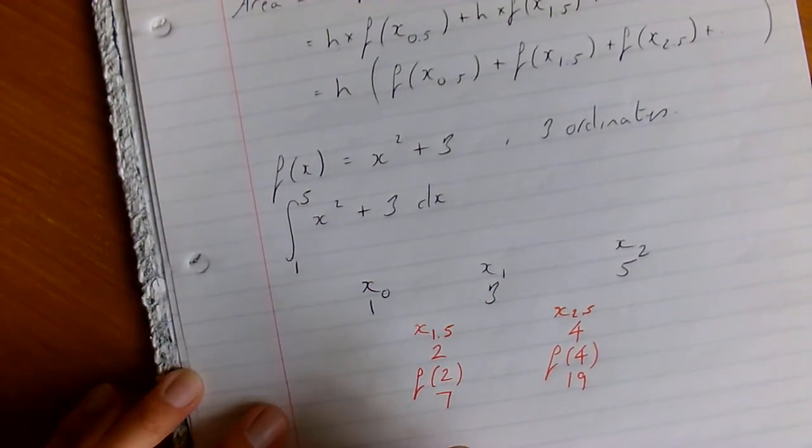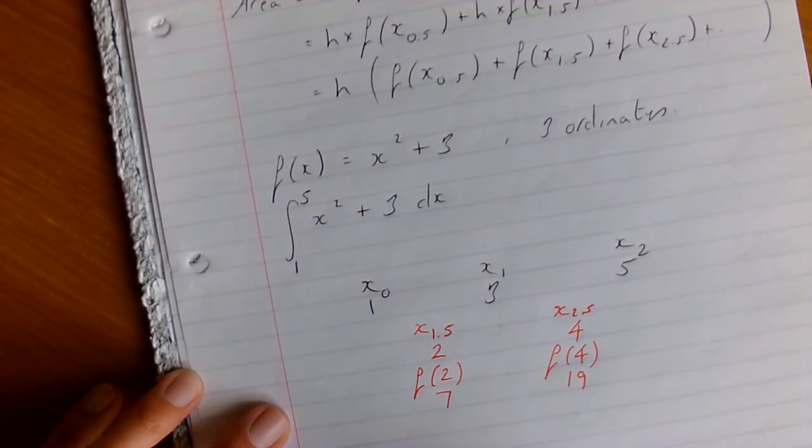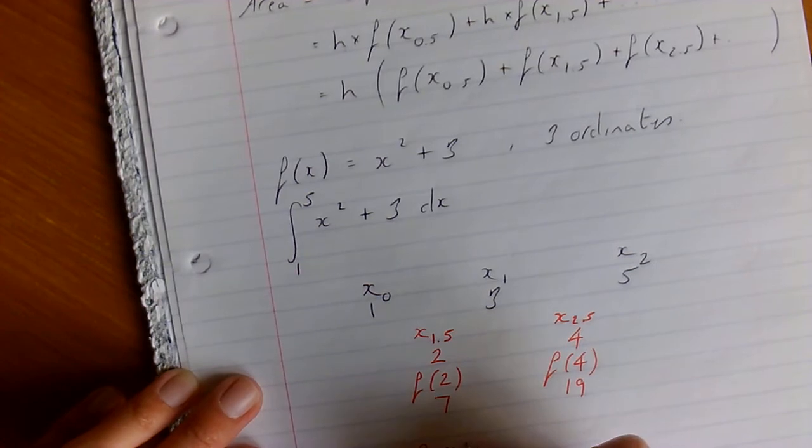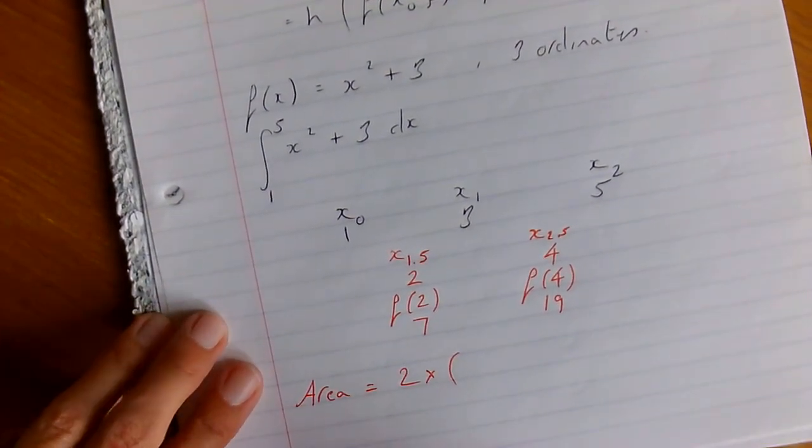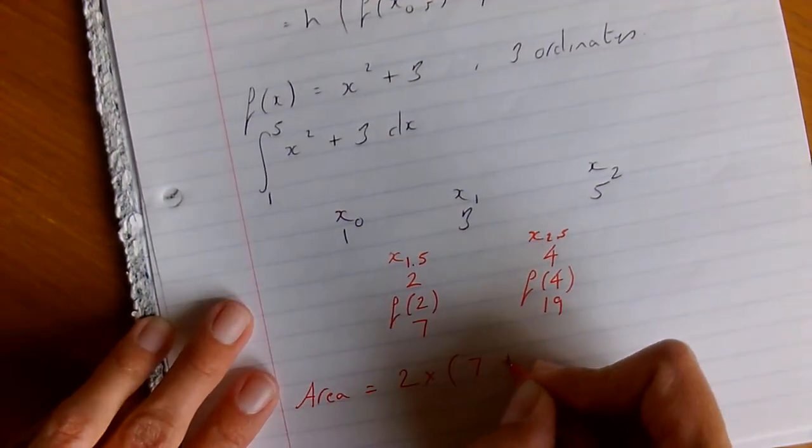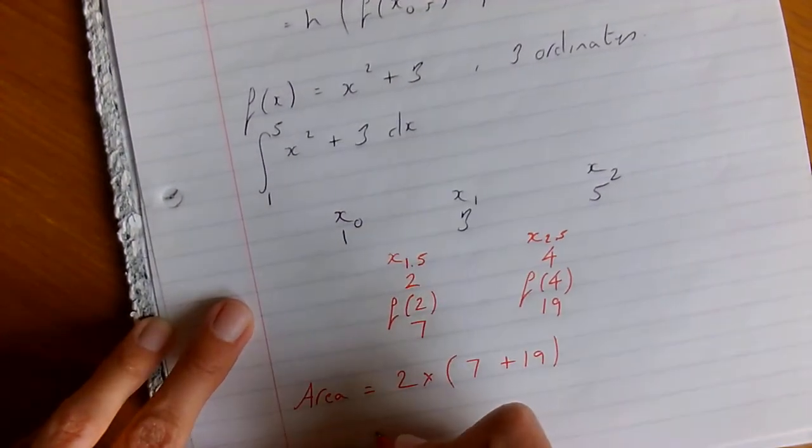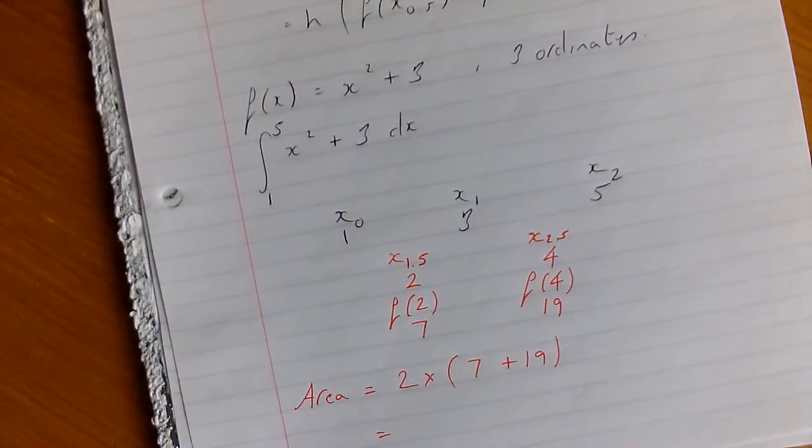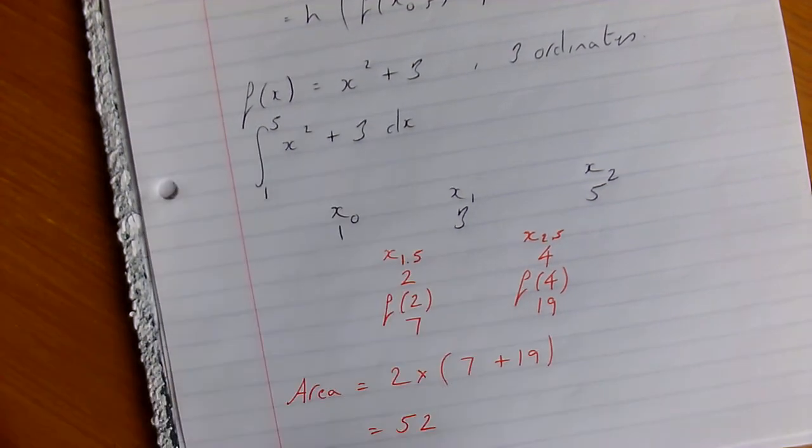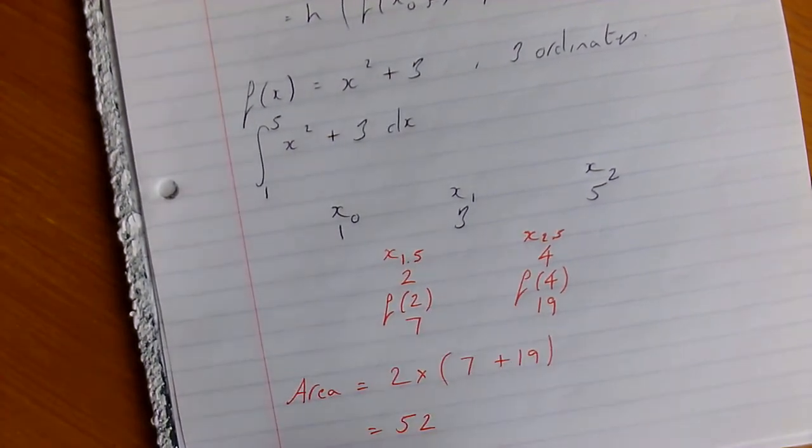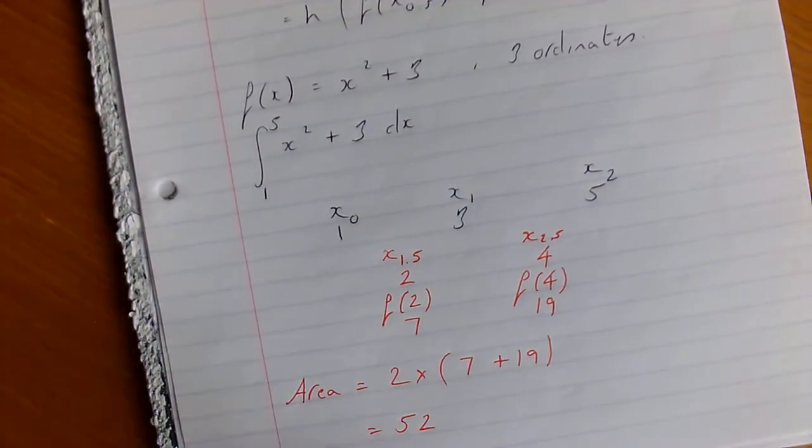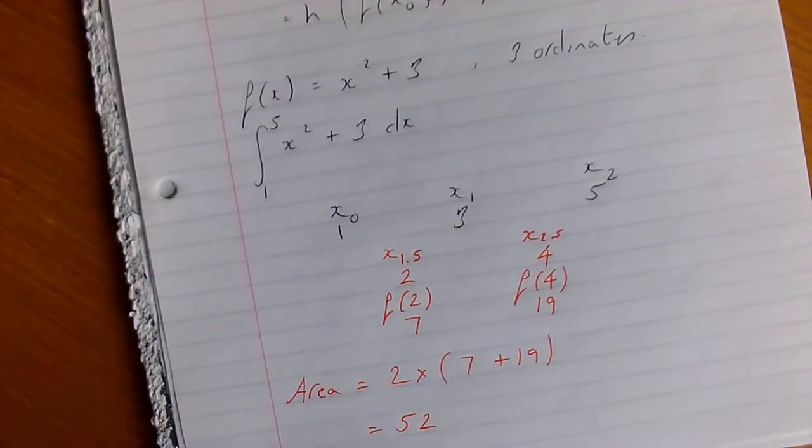So the area is going to equal the height. Well it's going up in 2's. Times by. And then we just add together the different functions. So 7 add 19. So 7 add 19 is 26. Times that by 2 is 52. So if we were estimating using the mid-ordinate rule, the area between 1 and 5 of x squared add 3, it would equal 52. So let's see how accurate it is.